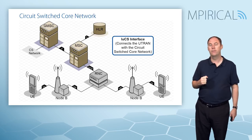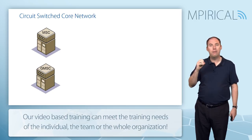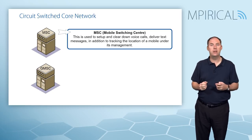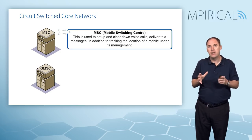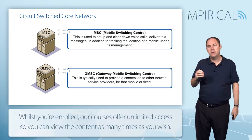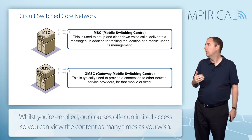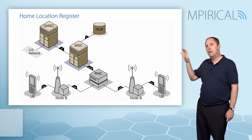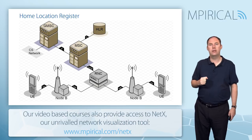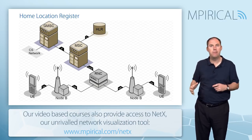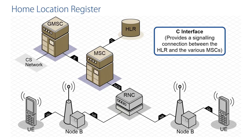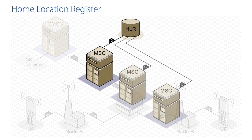In the circuit switch core we have MSCs — Mobile Switching Centers. These are about making and receiving calls, managing text messaging, and keeping information about where the mobile is currently located. There is also a Gateway MSC, which is about interconnecting to other service providers — fixed operators, mobile operators, etc. We also have in the core network a HLR — a Home Location Register — a store of all the subscribers belonging to that service provider. The C interface allows the HLR and the MSC to connect.